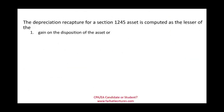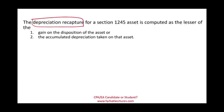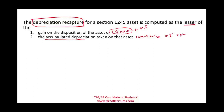So let's take a look at the rules. To compute depreciation recapture, I compute the gain on the disposition and look at the accumulated depreciation. The amount of depreciation recapture should be the lesser of these two. In the prior example, accumulated depreciation was $100,000 and the gain on the disposition was $15,000. So the depreciation recapture is the lesser — $15,000 — which is treated as ordinary income. I already took advantage of the $100,000 cost deducted against ordinary income.